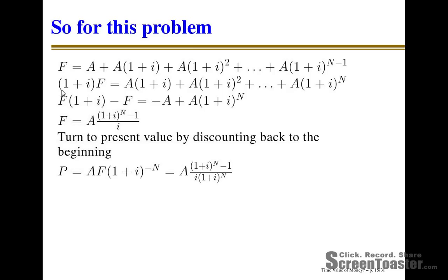Below it is part of a trick to make this ugly equation turn into something quite lovely. You probably learned this in your second-term calculus class when dealing with sequences and series. What you do is multiply both sides of this equation by (1+i): F gets multiplied by (1+i), A becomes A times (1+i), and A times (1+i) becomes A times (1+i) squared, and so on down the line.